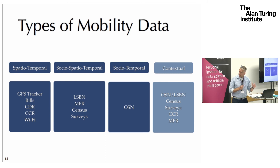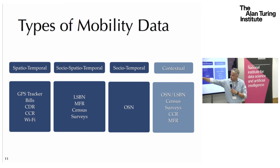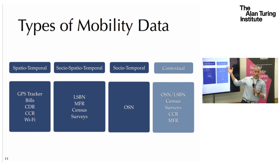I'll share this slide later — it just summarizes what you generally get from each data type. Some have spatial and temporal information, some have social, spatial, and temporal information, some have only social and temporal, and some have contextual data as well.